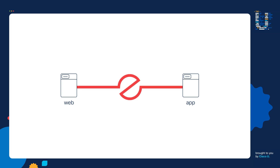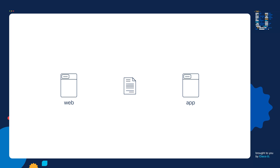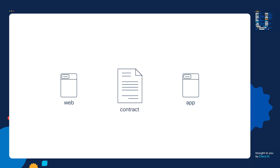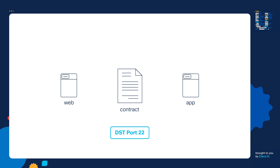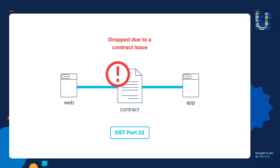To understand what's going on, we need to talk about contracts in ACI. By default, different types of servers in ACI are not allowed to communicate with each other. To enable communication, you apply a contract between different server types — you can think of contracts as like the ACLs of ACI. To allow the web servers to send SSH traffic to the app servers, you'd create a contract that permits traffic destined to port 22 and apply it to both server groups. But according to the ELAM report, the SSH traffic is being dropped due to a contract issue, so there is likely something wrong with the contract configuration.